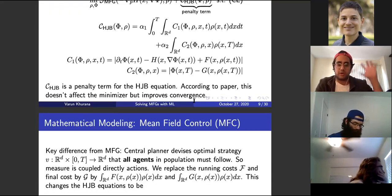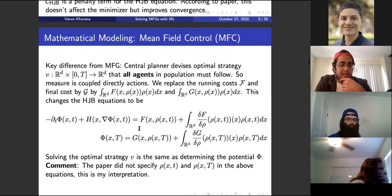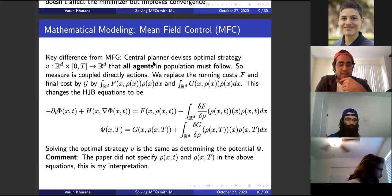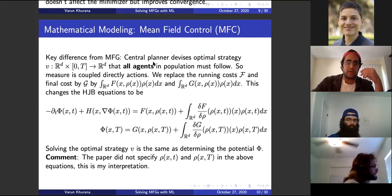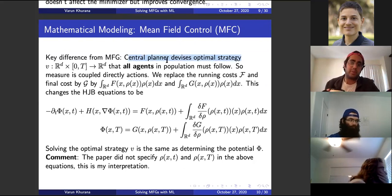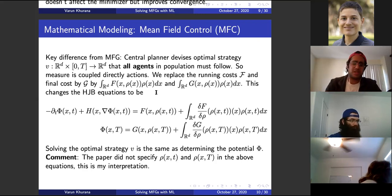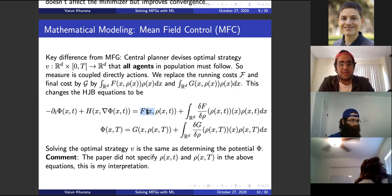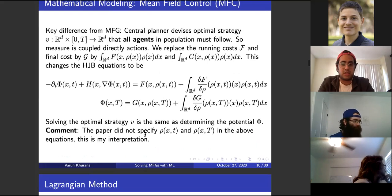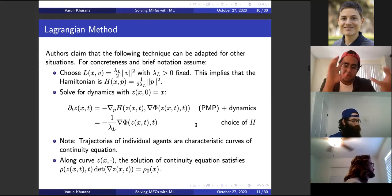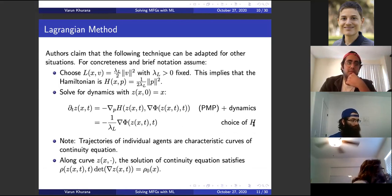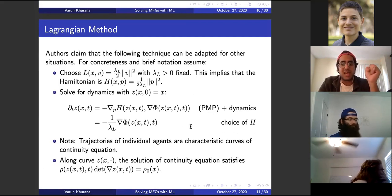As an aside, a Mean Field Control problem is essentially the same as what we've had so far with Mean Field Games, except there's a central planner who gets to pick V for every single agent. The only thing that changes is the right-hand side of the Hamilton-Jacobi-Bellman equations. The same type of strategy we're going to talk about could potentially be used for that as well.